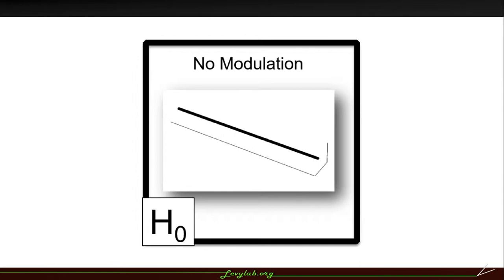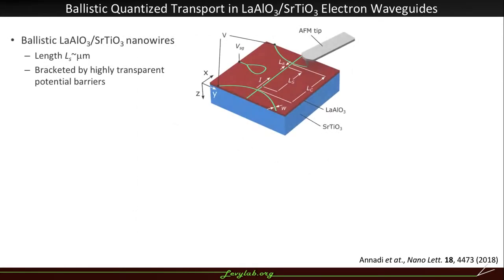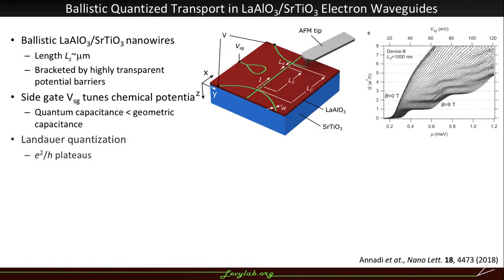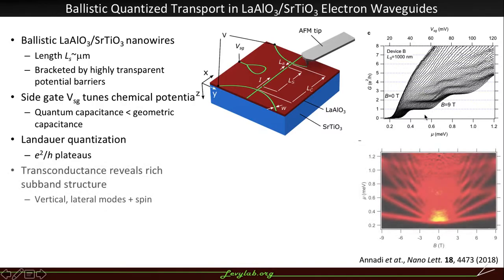Just to briefly go over what this straight electron waveguide looks like. We see ballistic transport in these devices. It's a straight section of wire which is bracketed by these highly transparent potential barriers which allows us to tune the chemical potential of the device.